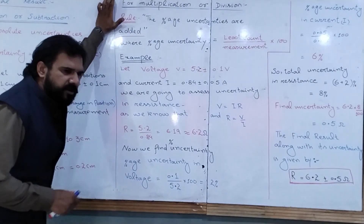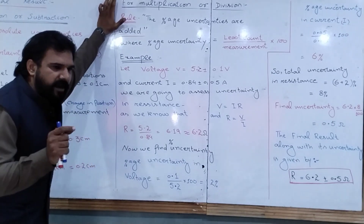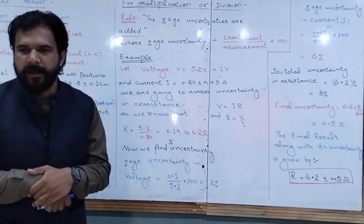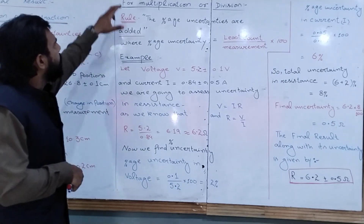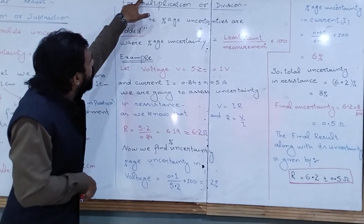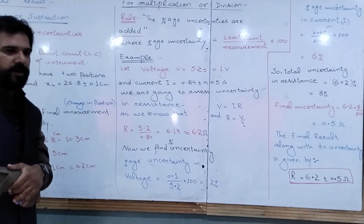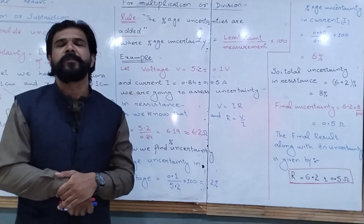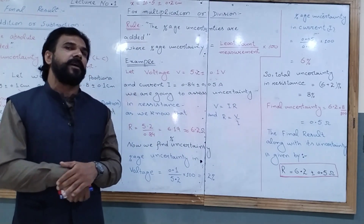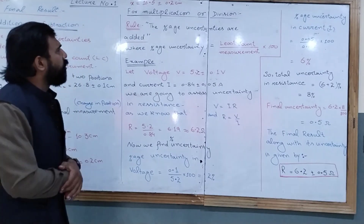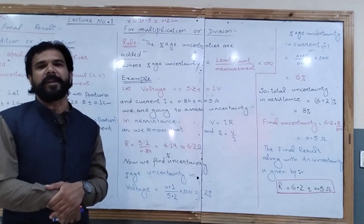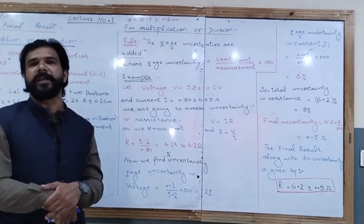For the addition or subtraction example, the final result is x = 16.5 ± 0.2 cm. This 0.2 cm is the total uncertainty in the final result. We have now understood the first rule for assessing the total uncertainty in the final result.